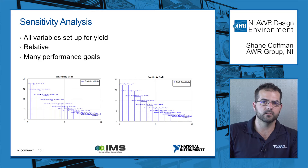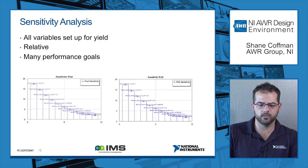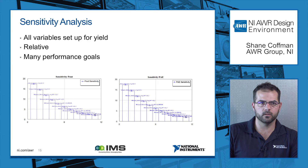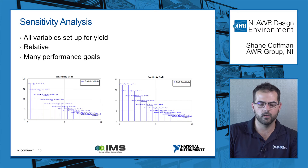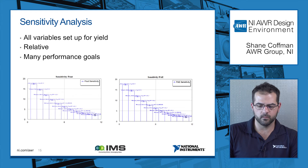In addition to those types of analysis, we actually have the capability to do a full sensitivity analysis or a Pareto analysis. The benefit this gives you is that all the variables set up for yield are weighted against one another, and you can look at which particular parameters in your yield analysis are causing the most change or degradation of particular performance metrics. So for example, we're looking at the sensitivity of output power and the sensitivity of PAE over all the variables in our particular yield analysis, and those variables are going to be ranked differently.